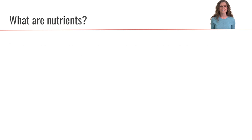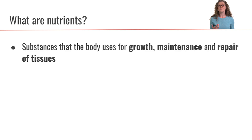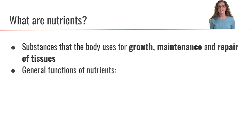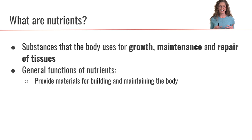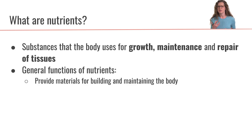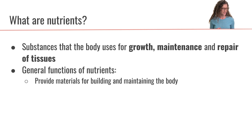Building on that, our next natural question is: what are nutrients? Nutrients are the substances that the body uses for growth, maintenance, and repair of tissues. The general functions of nutrients are to provide the raw materials that we need in order to build and maintain the body. Keep in mind that there's going to be a lot of wear and tear on our body as we go through life, so we need to both build new tissue as well as repair and maintain our current tissue.